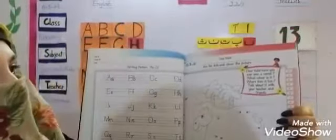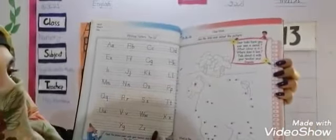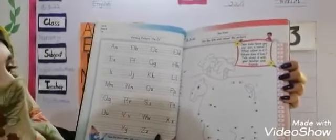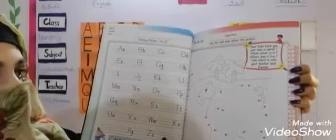Open your English word book, page number 2. Join the dots and color the picture. Here you have a camel. You have to join those dots to complete the camel and color it.